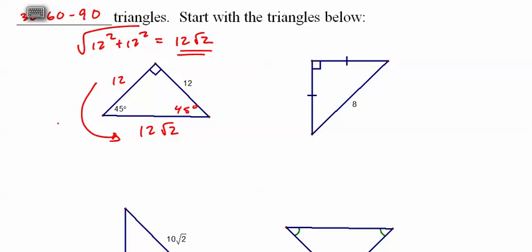To get to the hypotenuse, you multiply by root 2. Here, the hypotenuse is going backwards, so you divide by root 2.